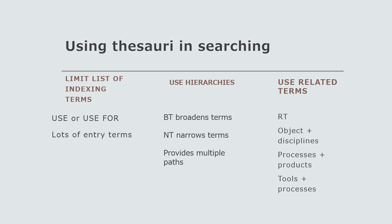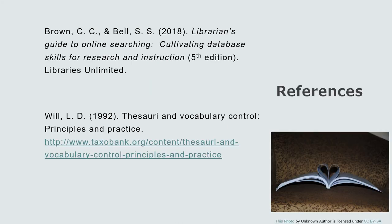Finally, scope notes, or SN, define the boundaries or inclusiveness of a term. The term butter might have a scope note that the search should include nut butters and yak butter, or that it should be distinguished from the phrasal verb to butter someone up. Scope notes help prioritize users in a search. They provide multiple pathways towards information, making it more easily accessible. I hope you've enjoyed this presentation and will find it useful in your future searches.